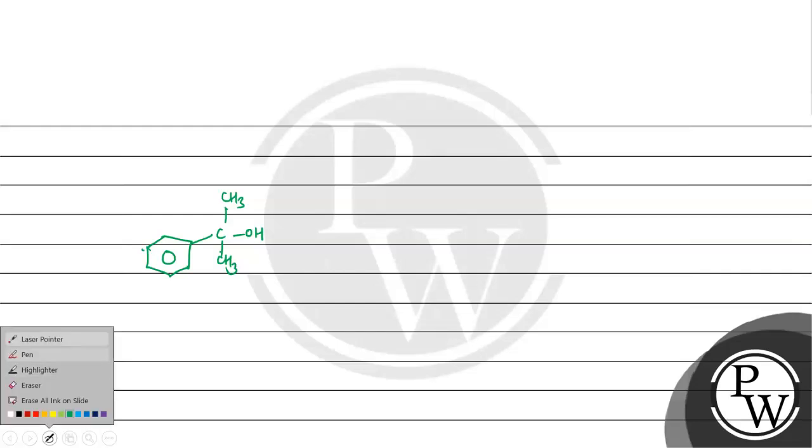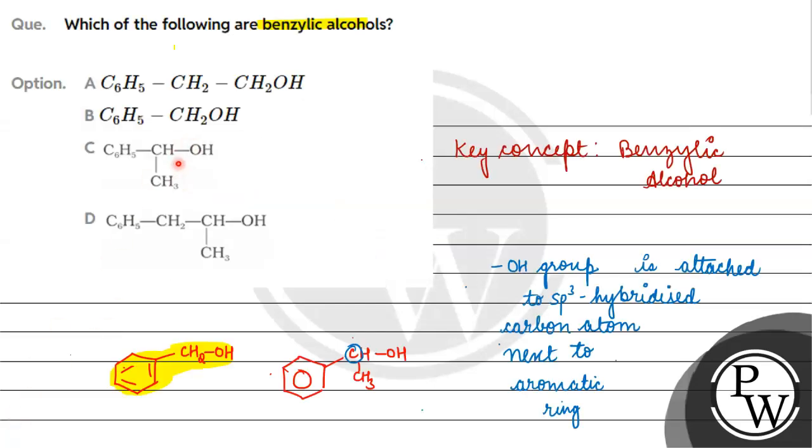Next case यह हो सकता है कि इस पे 2 methyl groups लगे हों. यह भी benzylic alcohol है क्योंकि यह जो carbon है it's SP3 hybridized है, इसके बगल में aromatic ring है and it is attached to OH group. So this is our benzylic alcohol.